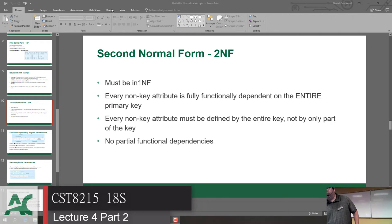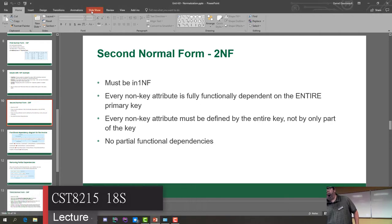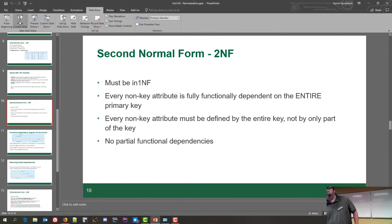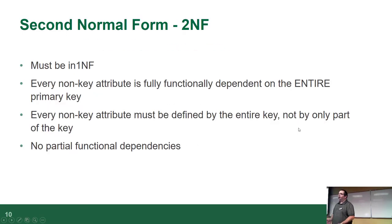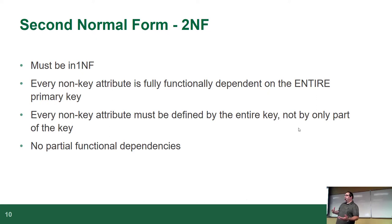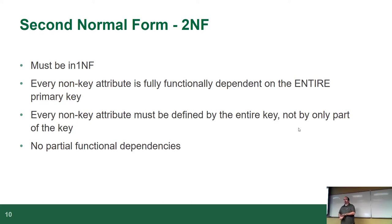Welcome to part two of lecture four. Last week I left off having finished discussing what the first normal form was, which essentially means there is no repeating groups of rows, all the rows are populated, and you've picked out potential candidate keys. That's the first normal form.